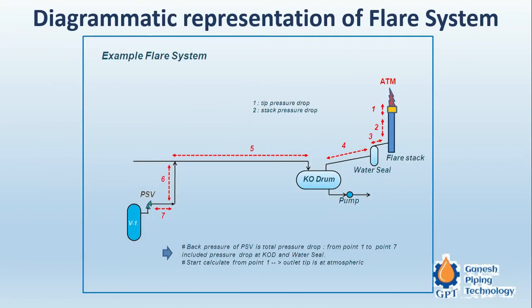This is a diagrammatic representation of the flare system. There are PSVs and vent lines where we can drain out before plant shutdown. We can see the tip, pressure drop, and stack pressure drop. This is the tip from where gases are burnt to atmosphere — the flare stack. All flare lines are sloped at a ratio of 1:200, and they are routed to a single flare header, which is directed to a knockout drum.